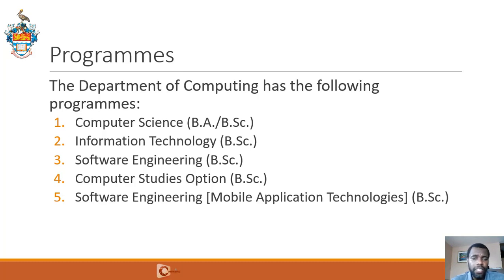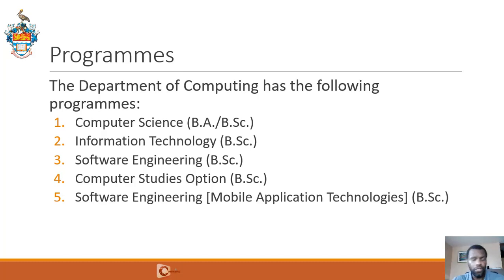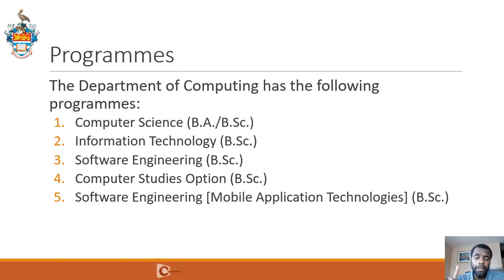And then we have the Computer Studies option, which is basically a combination of computing courses, math, and social sciences courses. All you need to be able to major in any of these disciplines is two units of a CAPE science subject. CAPE science subjects are any one of biology, chemistry, computer science, physics, or pure mathematics.